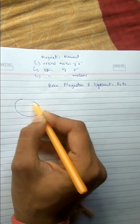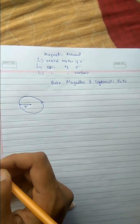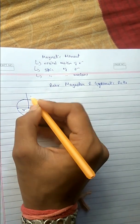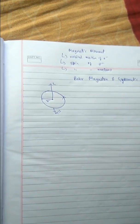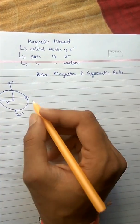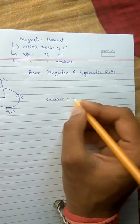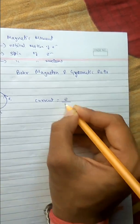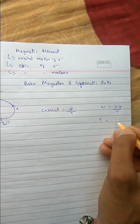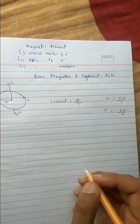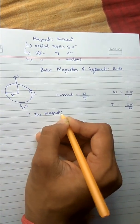Suppose an electron is moving in a circular path. The charge is e, the radius is r, the angular momentum is L, and the magnetic moment is shown here. The current in this loop is charge per unit time, which is e divided by t. The time period t can also be written as 2π divided by omega, which we will use later.